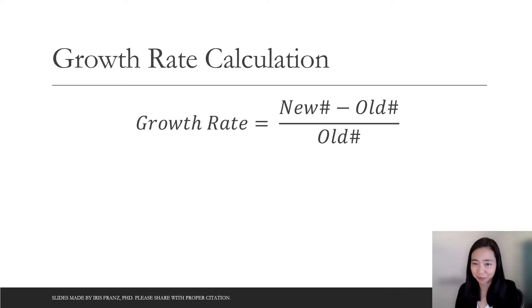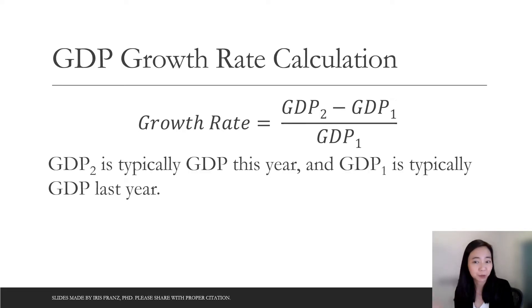Let's take a look at the example. So for example, GDP growth rate, we have the GDP of year two minus the GDP of year one divided by the GDP of year one, then we get the GDP growth rate.